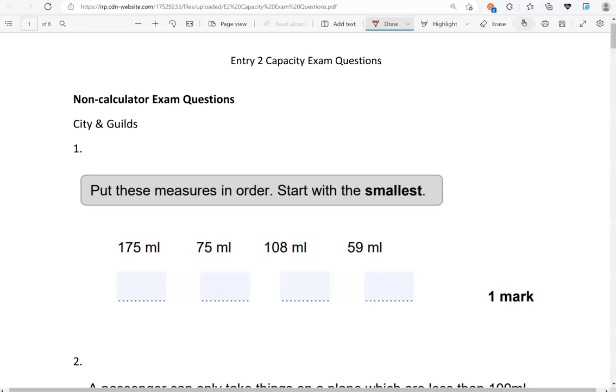Here is the first one. Put these measures in order. Start with the smallest. 175 milliliters, 75 milliliters, 108 milliliters, 59 milliliters.